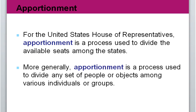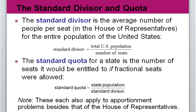The first thing we need to talk about is the standard divisor. The standard divisor is the average number of people per seat in the House of Representatives. To get it, we take the total US population and divide it by the number of seats, which is 435, to see how many people effectively vote for each seat if everything is done completely evenly.